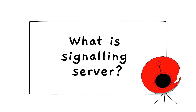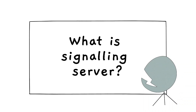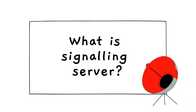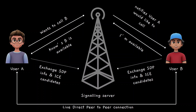In the last video we talked about the signaling server. Let's now understand in detail how this signaling server is actually going to work in our application. Here we have two users, User A and User B, who want to communicate with each other. First of all, User A is going to send a request to User B that it wants to connect, but it cannot happen directly because they are not yet connected.